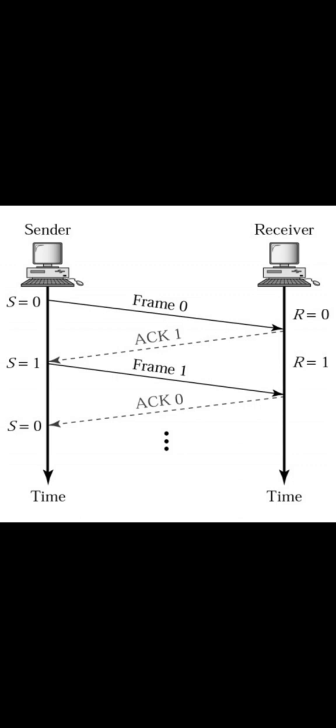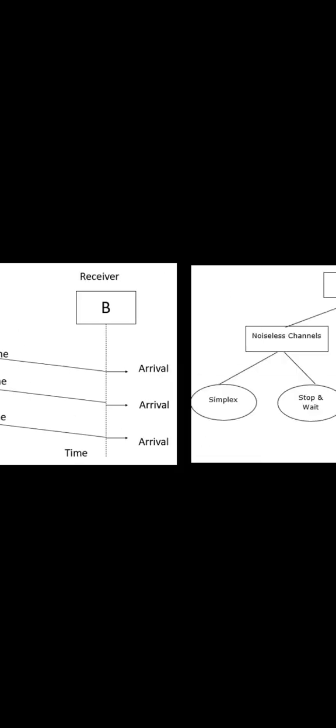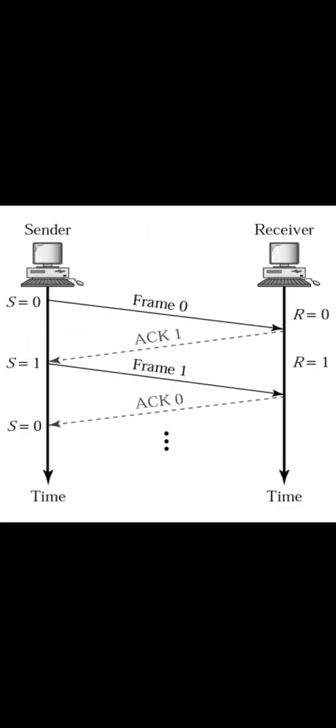Stop-and-wait ARQ is straightforward. Suppose your mobile storage or Gmail storage is full — in this case, new data cannot come in. You must remove some data first, and then the new data will be sent automatically. The data stops because storage is full and waits; after freeing up space, the data is sent automatically. This automatic resending is called ARQ — automatic repeat request.